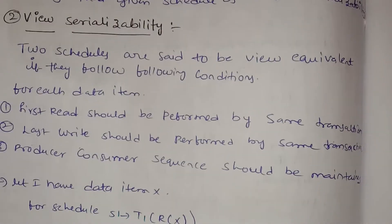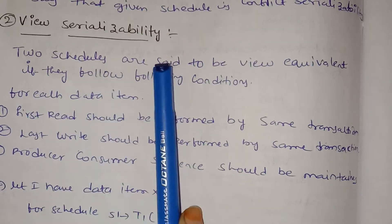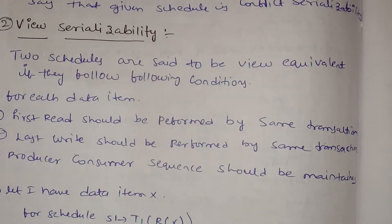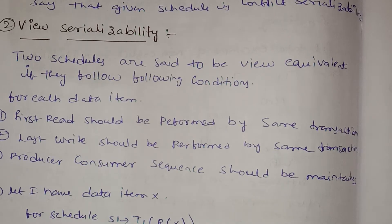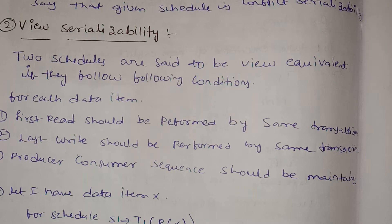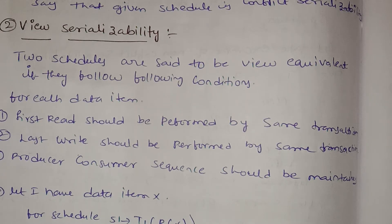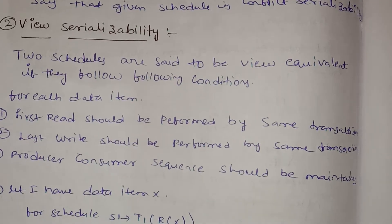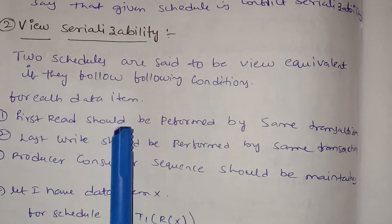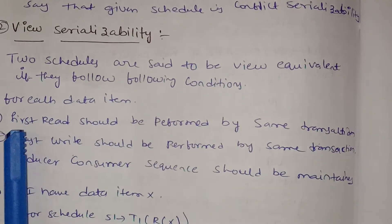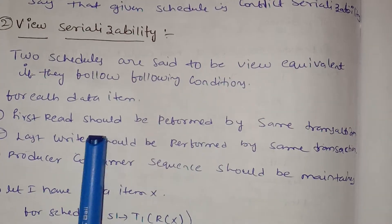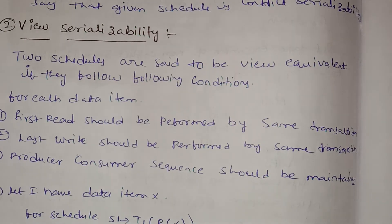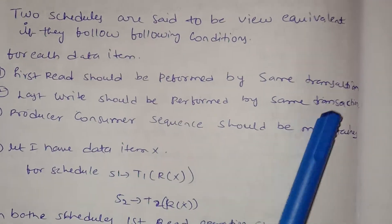Next is view serializability. Two schedules are said to be view equivalent if they follow certain conditions. We compare two schedules for view equivalence. For each data item, such as R(X) and W(X), the first read should be performed by the same transaction in both schedules.